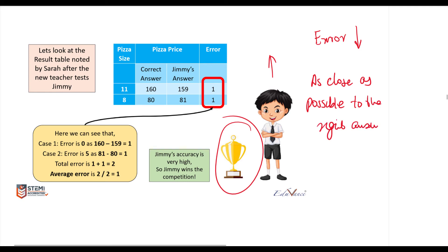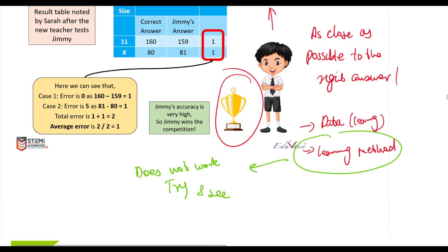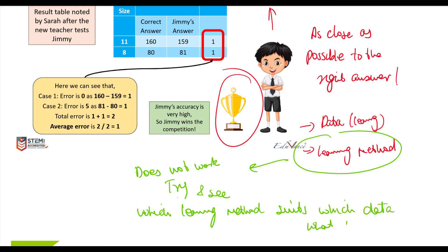In this lecture the average error can be improved by a combination of two options: option one is increasing the dataset — our learning data set — and option two is changing the learning method. One very important point to highlight: changing the learning method does not always work. You have to try and see which learning method suits which data, and we will see this in future sessions of our course.